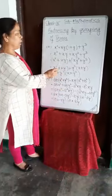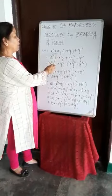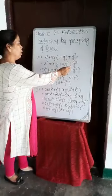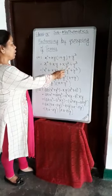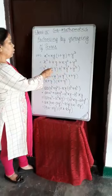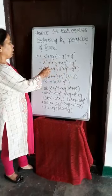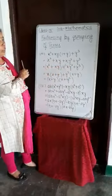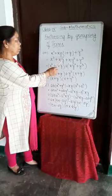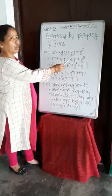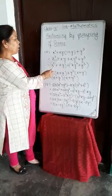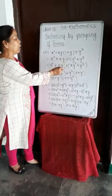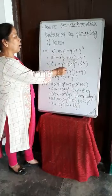Now see the third example: X squared plus XY multiplied by (1 plus Y) plus Y cubed. There are only 3 terms and nothing is common, so we open the bracket first. This gives X squared plus XY plus XY squared plus Y cubed.